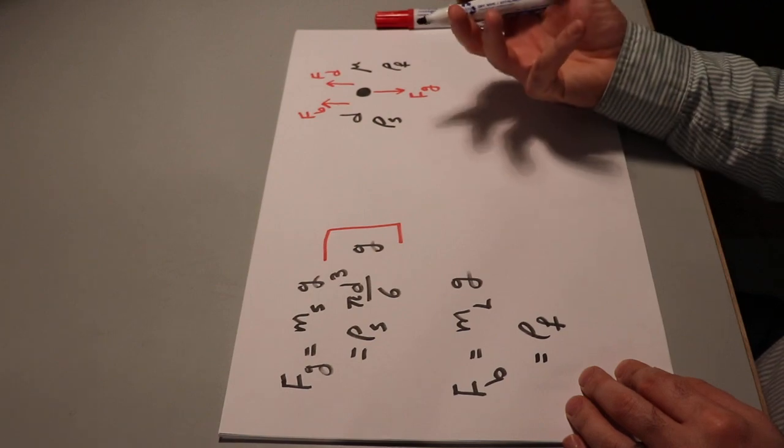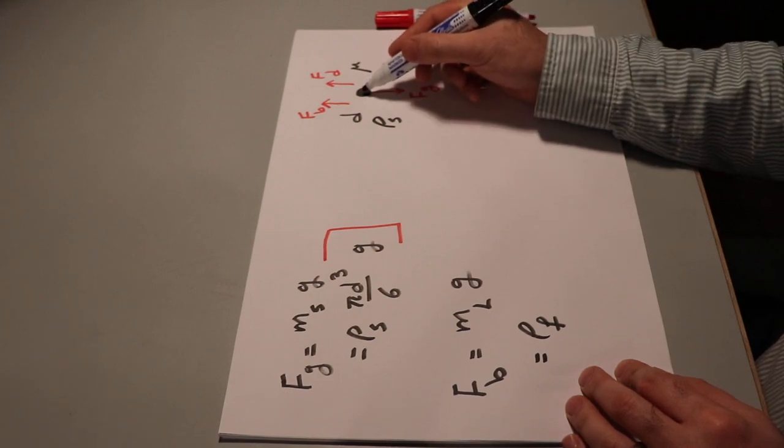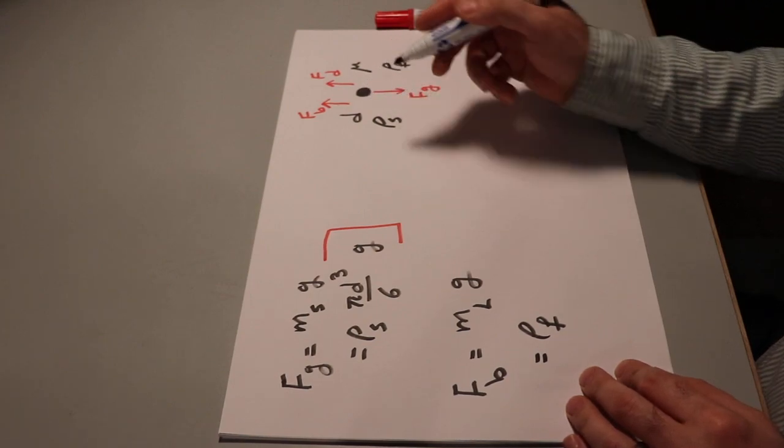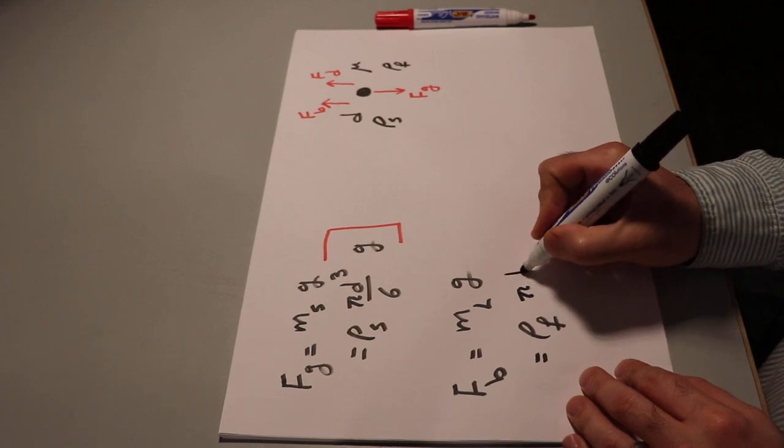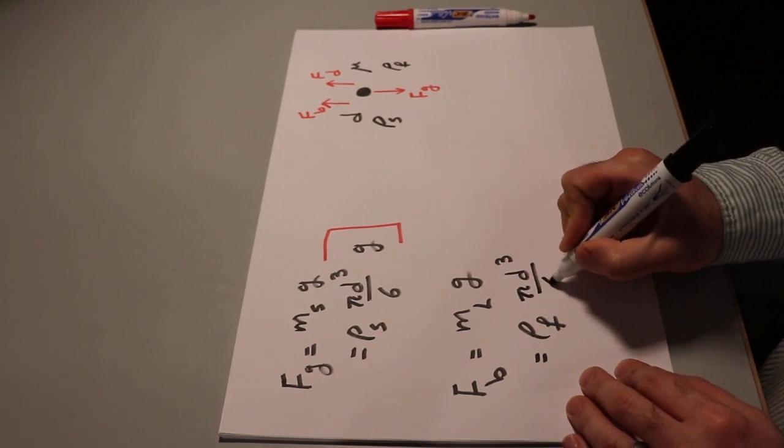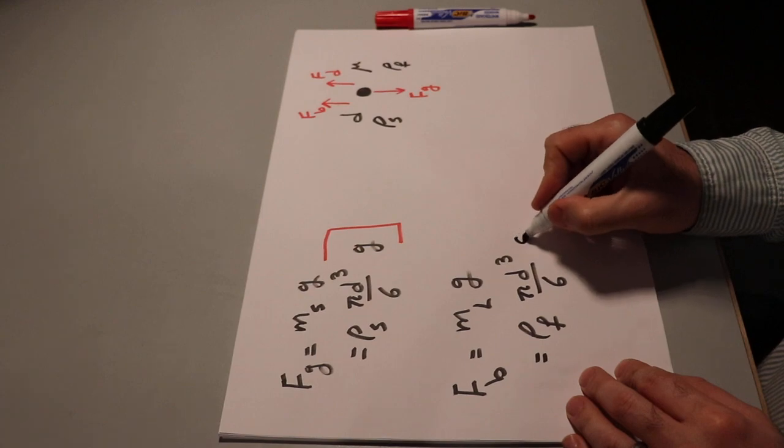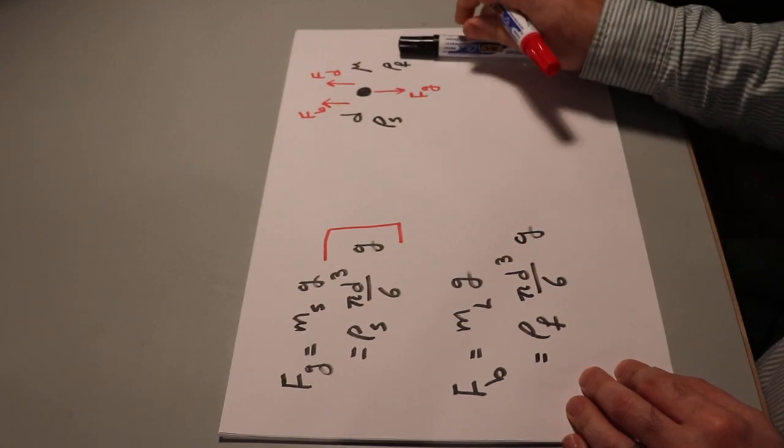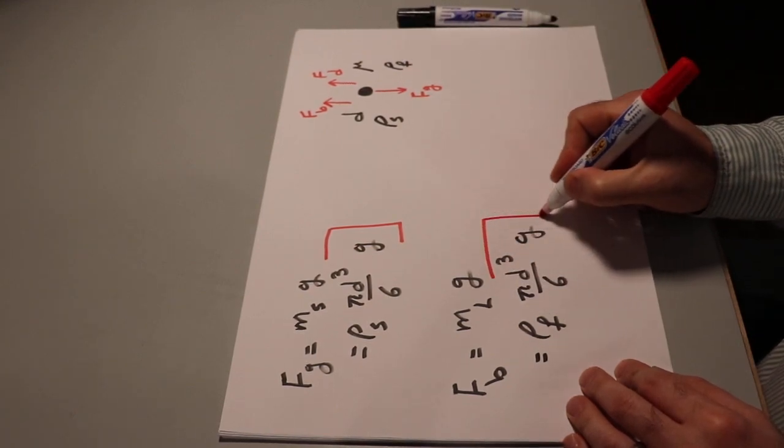which is equal to the volume of the solid, basically volume of this sphere, which is equal to pi d cubed divided by 6 times g. So that will be the buoyancy forces.